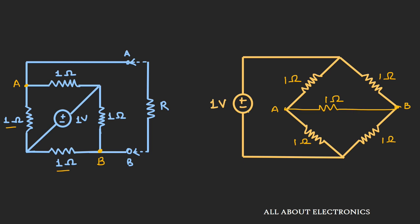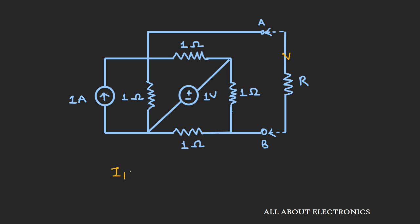Looking at the redrawn circuit, it is nothing but a balanced Wheatstone bridge. Since this is a balanced bridge, the current flowing through the 1-ohm resistor R is zero. So the value of I2 is zero ampere. We found that current I1 is 0.25 ampere when the 1A current source acts alone, and I2 is zero when only the 1V voltage source acts alone. Therefore, the total current I through resistor R is I1 + I2 = 0.25 ampere.